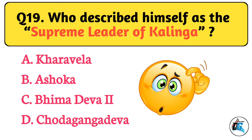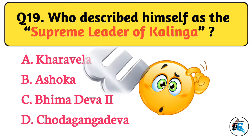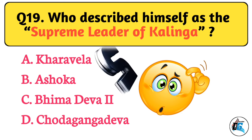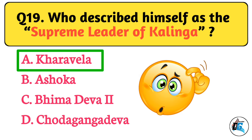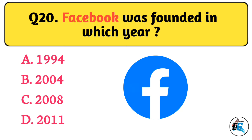Question No. 19. Who described himself as the Supreme Leader of Kalinga? The right answer is Option A: Kharavella.